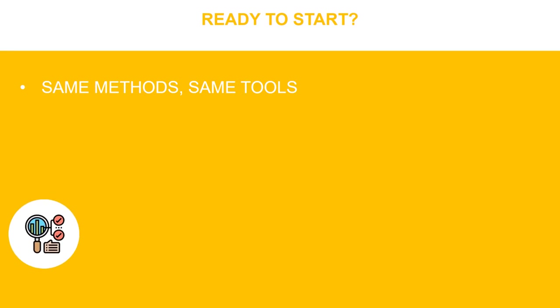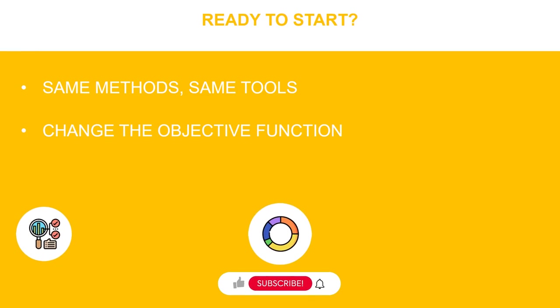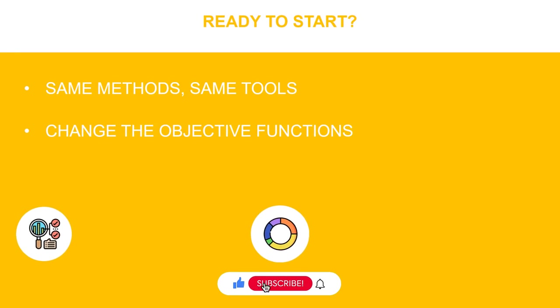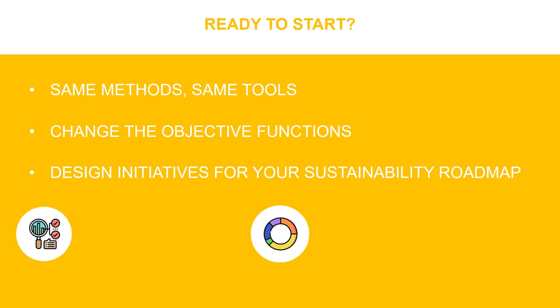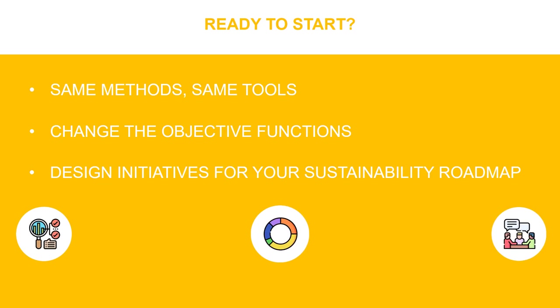To conclude, supply chain analytics can be great support for your green transformation. The methodology and tools are the same used for cost reduction and performance improvement — from a mathematical point of view, you just need to change the objective function from cost to CO2 emission minimization. The insights provided will help you design and implement initiatives to meet your green roadmap targets. You can find detailed examples and case studies in the blog and future videos. If you have any questions, feel free to share them in the comment section.